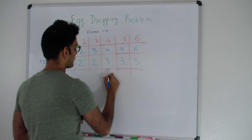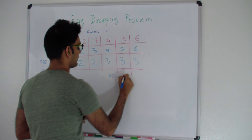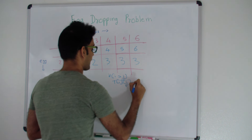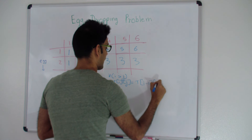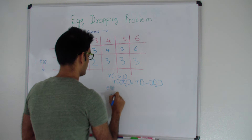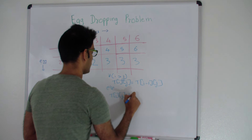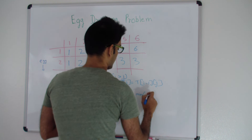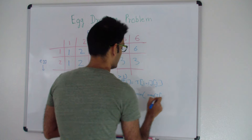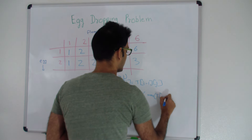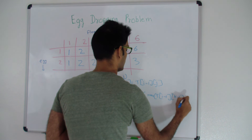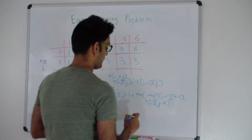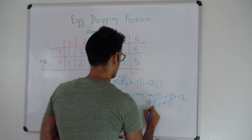Let's look at the formula. If i is greater than j — meaning the number of eggs is more than the number of floors — then t[i][j] gets the value from the top. Otherwise, t[i][j] = 1 + minimum over k from 1 to j of: max of t[i-1][k-1] (egg breaks, one less egg, k-1 floors below) and t[i][j-k] (egg doesn't break, same eggs, j-k floors remaining).